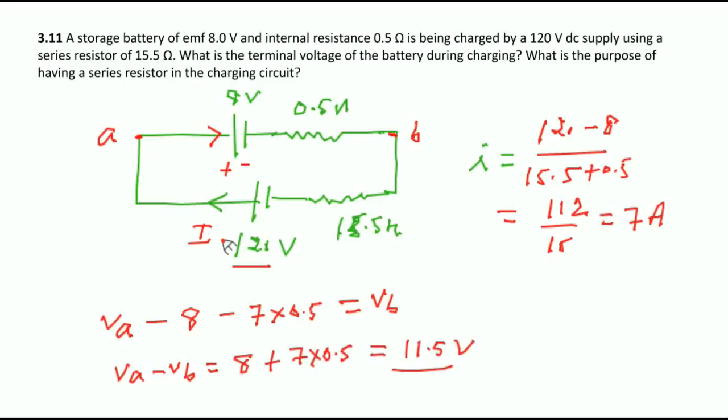This is the answer you have. Always you write for charging, potential difference across the battery will be E plus I×R. What is the purpose of having series resistance in the charging circuit?